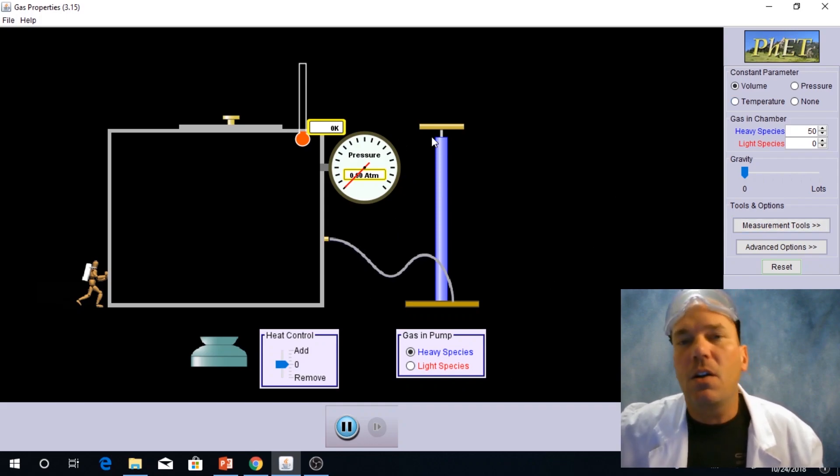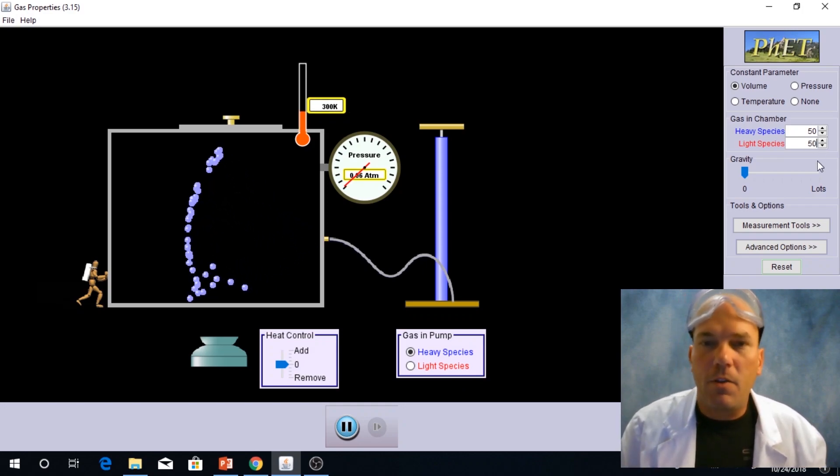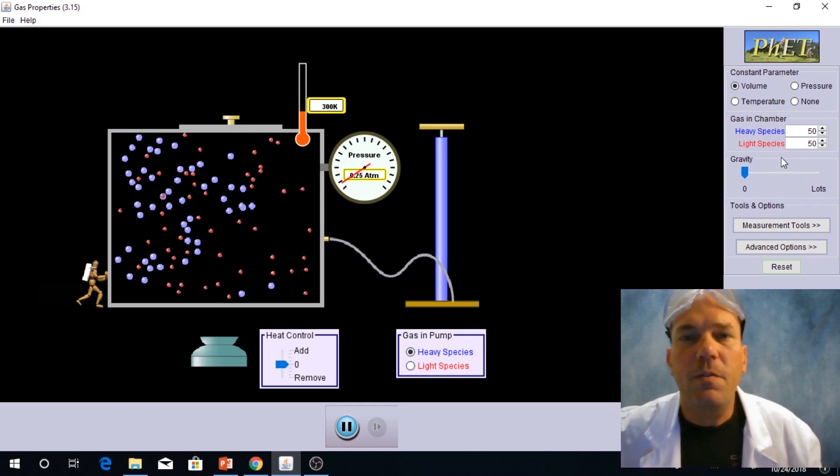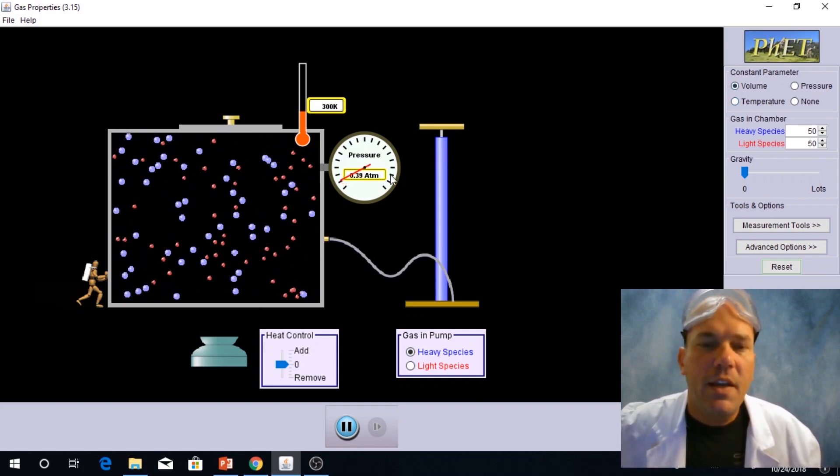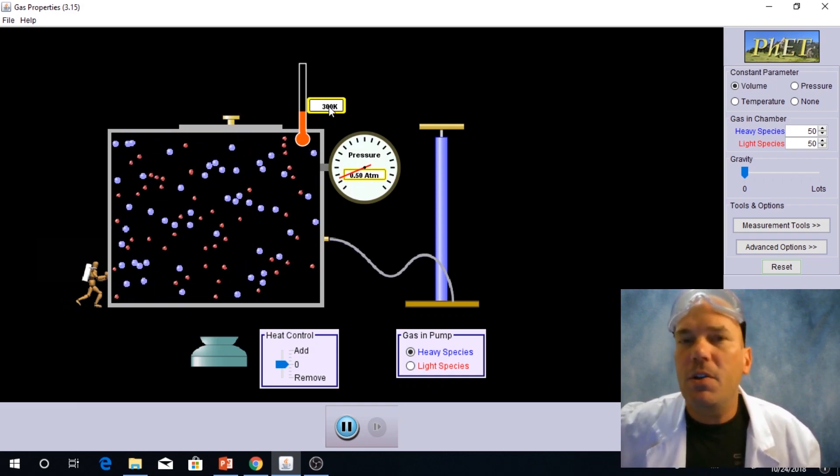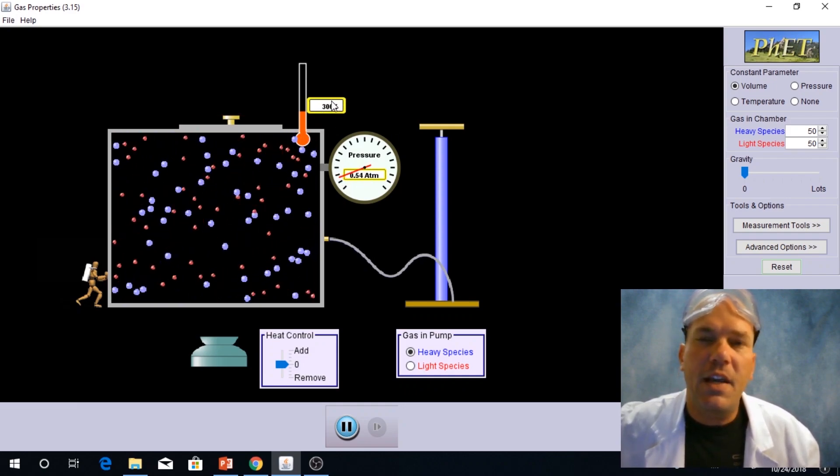So I am going to start off by putting 50 molecules into the chamber. I'm going to do the heavy species first, followed by 50 of the light species. So the first thing you should notice is we have an increase in pressure.